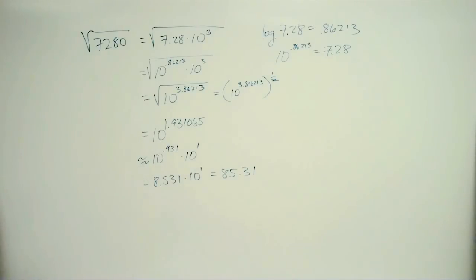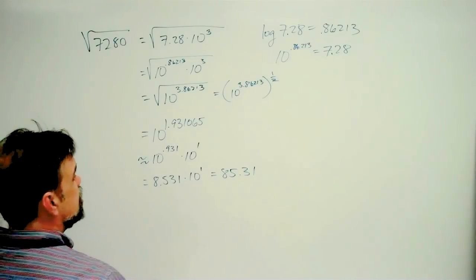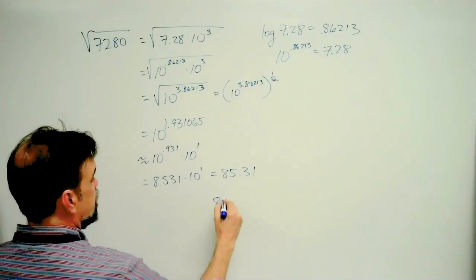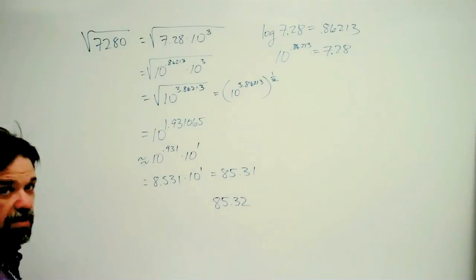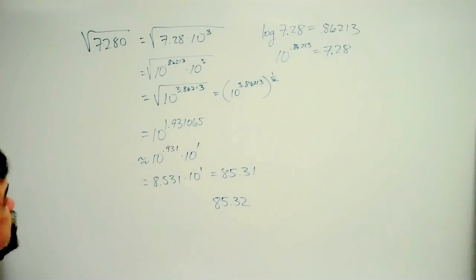If you grab a calculator and you take the square root of 7,280, what you're going to find is 85.32. That's a pretty good estimate, given that all we used were two sheets of paper rather than a handheld calculator.